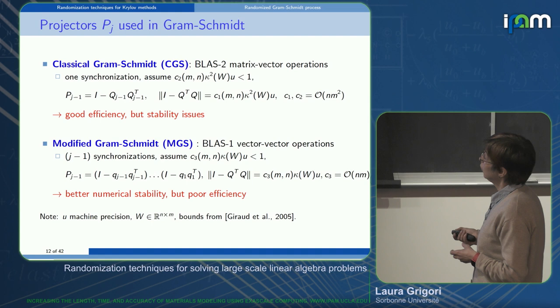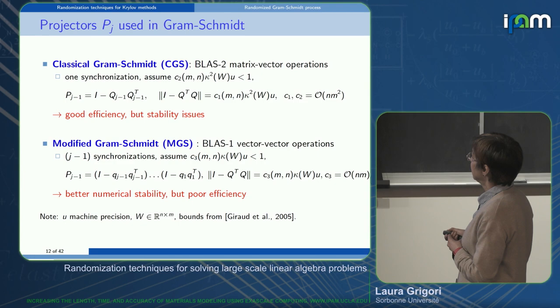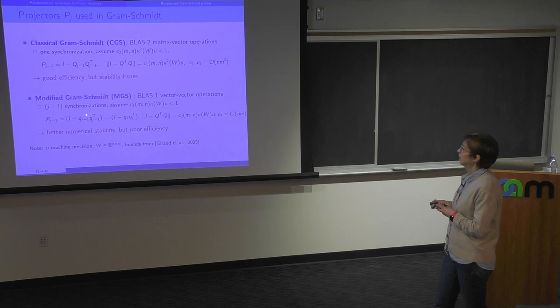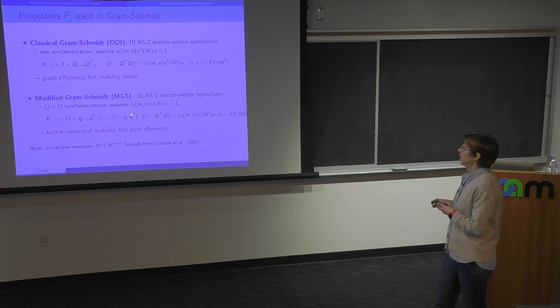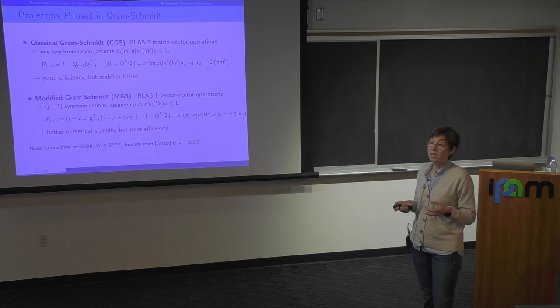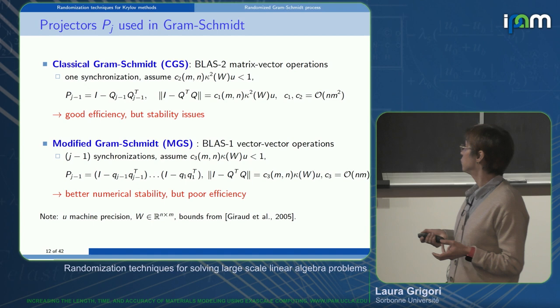Modified Gram-Schmidt (MGS) orthogonalizes against each previous vector sequentially, requiring j-1 synchronizations and j-1 vector operations — poor efficiency. But the loss of orthogonality depends only linearly on the condition number of W, giving better numerical stability. So very often people use modified Gram-Schmidt despite its parallel inefficiency.